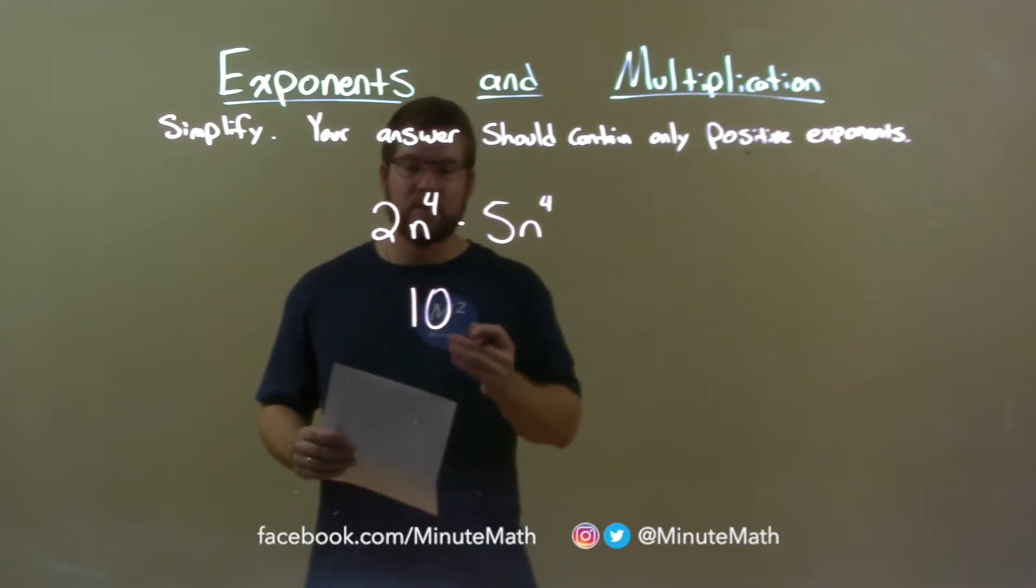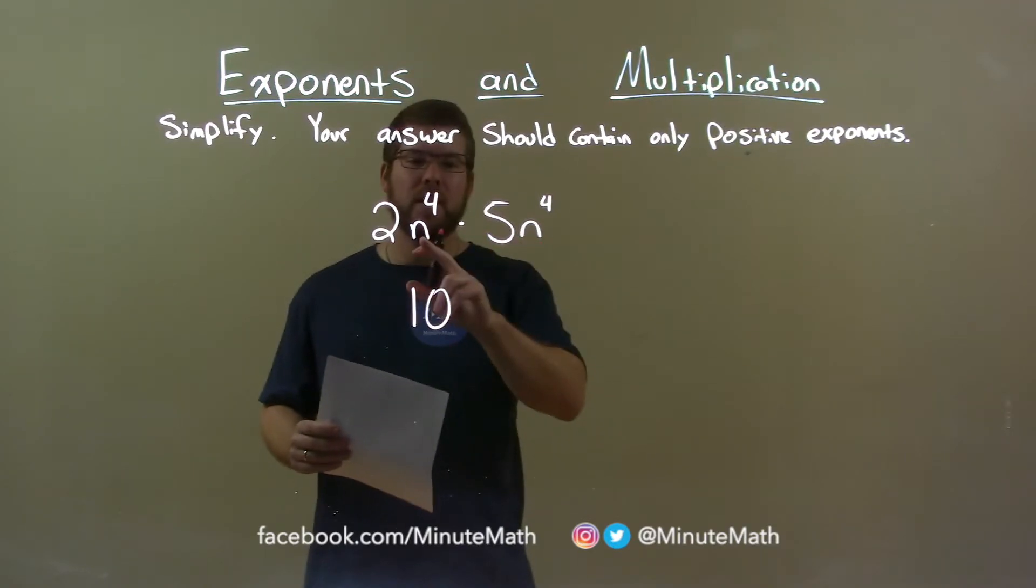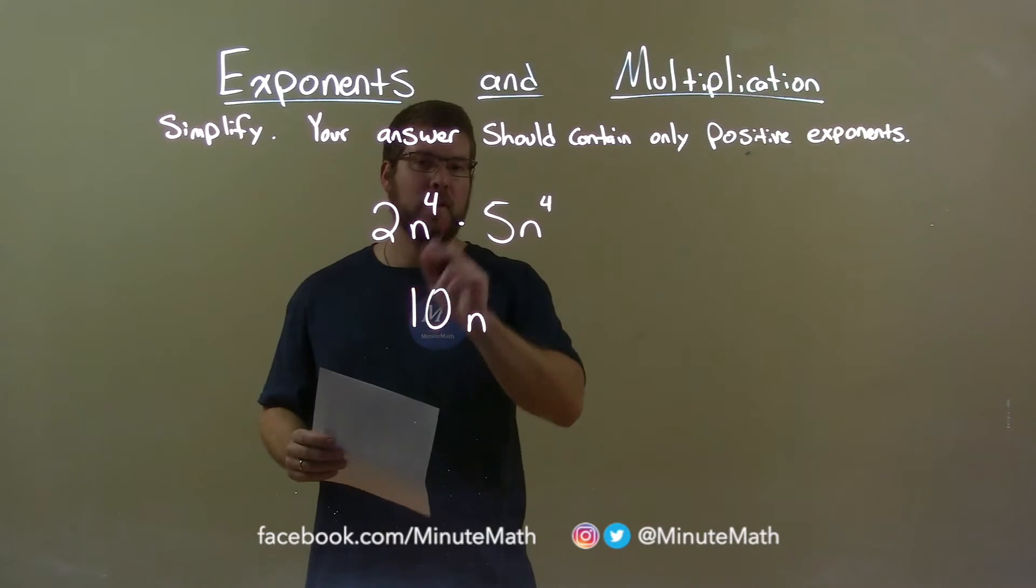Now let's look at the letters or the variables, n to the 4th and n to the 4th. Same base as n right there and when they're being multiplied we add the exponents, 4 plus 4 is 8.